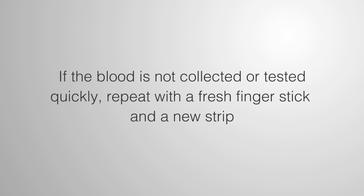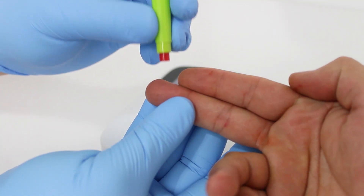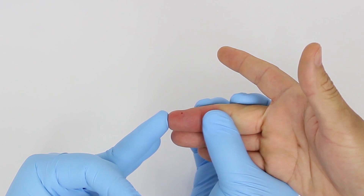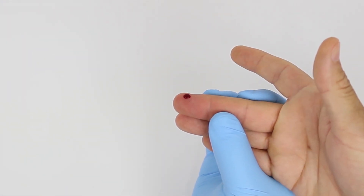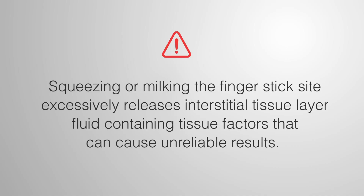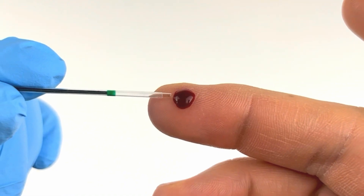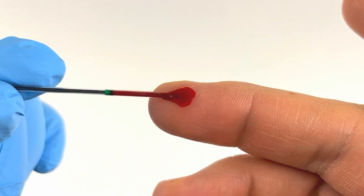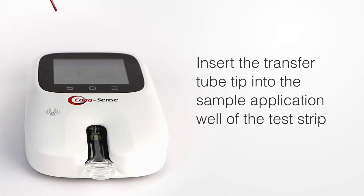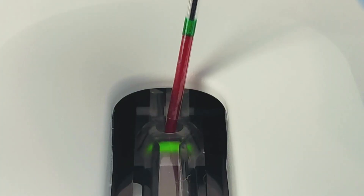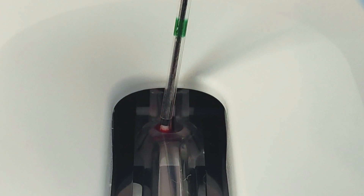If the blood is not collected or tested quickly, repeat with a fresh finger stick and a new strip. Use only 21-gauge lancets, as smaller diabetes lancets do not produce sufficient whole blood volume. Just a 10 to 12 microliters drop of blood sample is required. Squeezing or milking the finger stick site excessively releases interstitial tissue fluid containing tissue factors that can cause unreliable results. Collect the sample using a sample transfer tube, holding it horizontal; touch the tip to the bead of blood and let capillary action fill until blood flow stops at the green band. Insert the transfer tube tip into the sample application well of the test strip, touching the tip down at the flashing green light in front of the spinning wheel, then push the plunger down to dispense the sample fully.